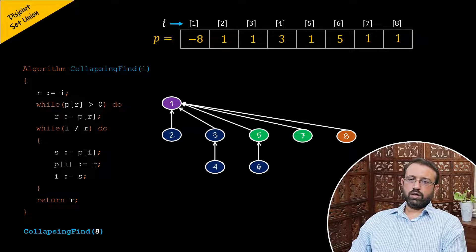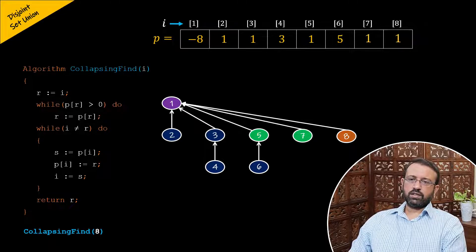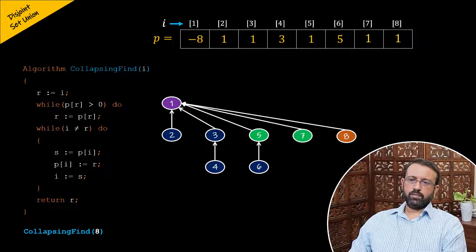So this is how the collapsing find algorithm works — returning the root node to which the element belongs, as well as collapsing all nodes along the path. This algorithm has better performance in subsequent find operations, since subsequent find operations for node 8 or any node that was on the path will only take one step to find its root and can be performed in constant time.